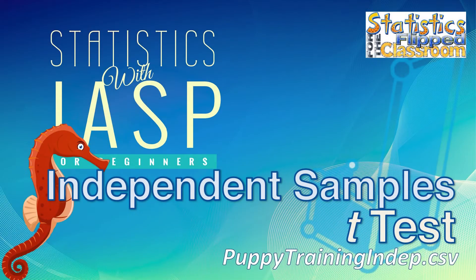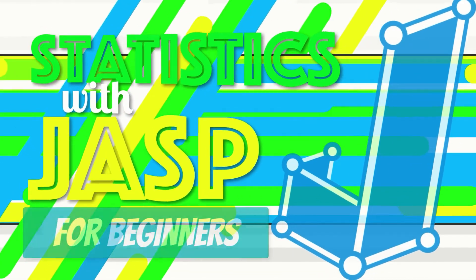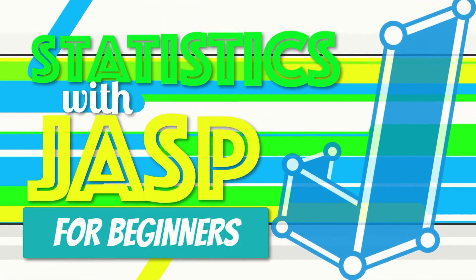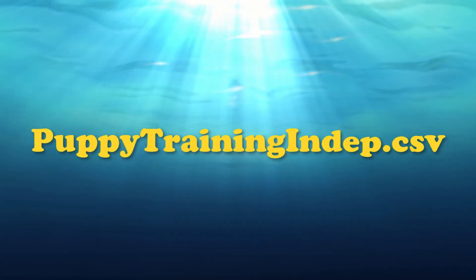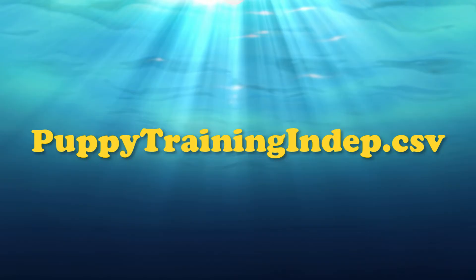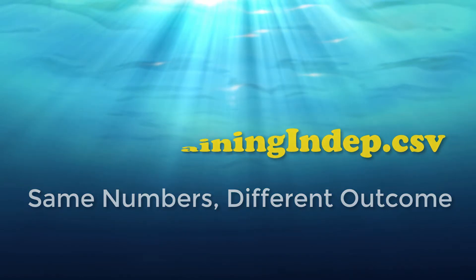So let's do an independent samples t-test in JASP. For this example, we will be using the PuppyTrainingIndependent.csv data set. We will use this same data in a different structure later when we do a paired samples t-test.